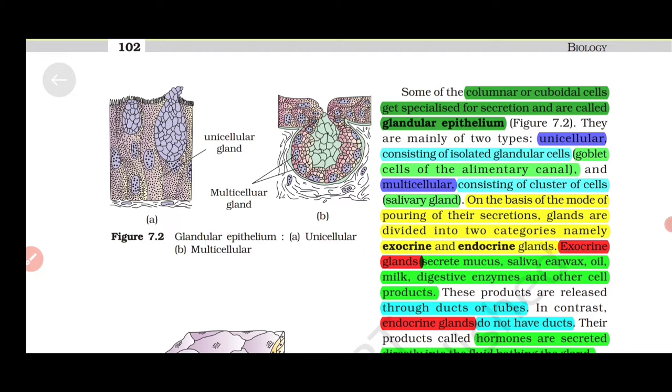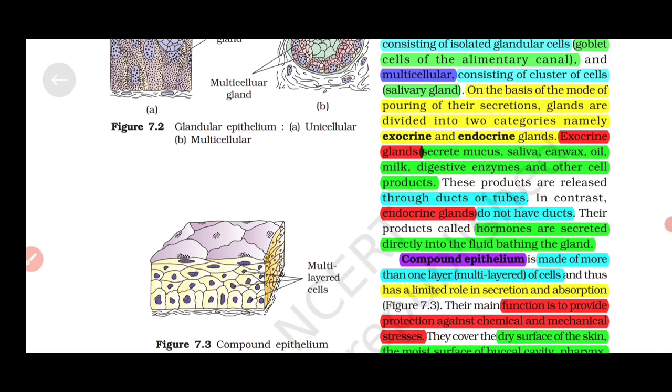Columnar or cuboidal cells specialized for secretion are called glandular epithelium. Unicellular glands consist of isolated glandular cells like goblet cells of the elementary canal. Multicellular glands consist of clusters of cells like the salivary gland. Based on the mode of pouring secretions, glands are divided into two categories: exocrine and endocrine glands.